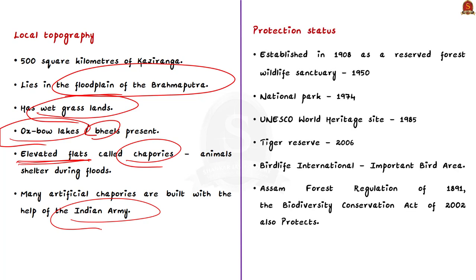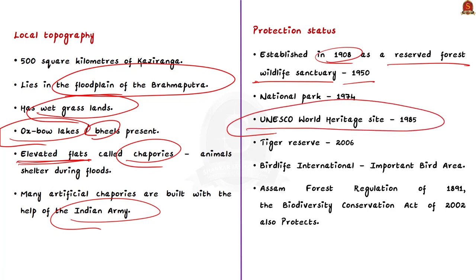Now let us look at the protection status of this National Park. Kaziranga is one of the most protected areas in the world. It was first established as a reserve forest in 1908, then made a wildlife sanctuary in 1950. The Assam National Park Act of 1968 was passed, and because of this act, Kaziranga became a National Park in 1974. It became a UNESCO World Heritage Site in 1985, and it has also been a Tiger Reserve since 2006.